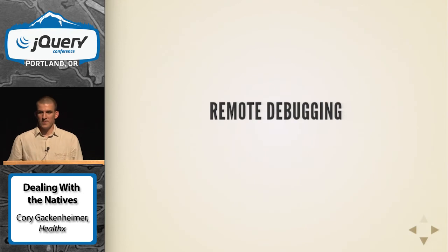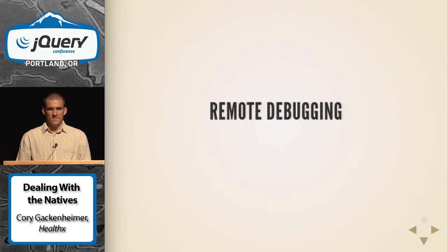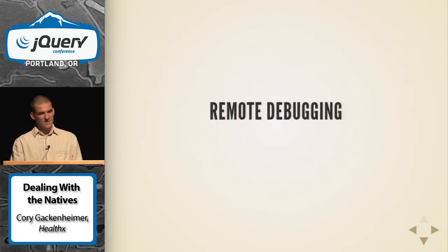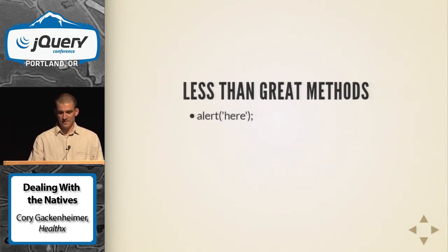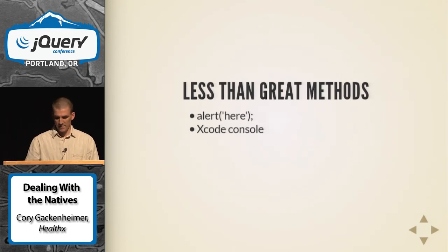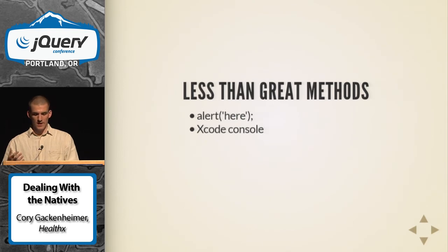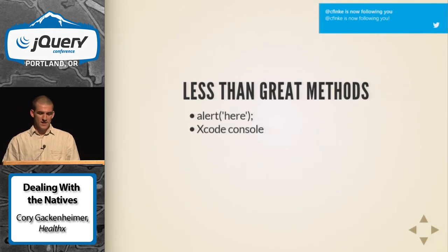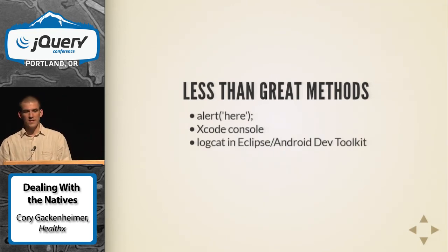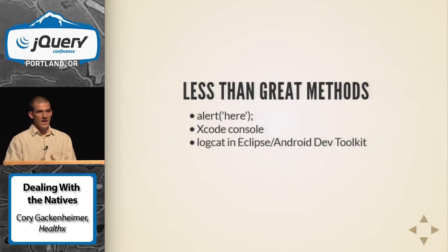Let's talk about remote debugging — it can make me a little stabby sometimes. Some methods aren't great. Alert statements in code, for instance. The Xcode console has all sorts of junk output where you might find a console.log statement buried in there. Android's Logcat is a similar situation — you can filter it a bit better, but you still sift through a lot of information.